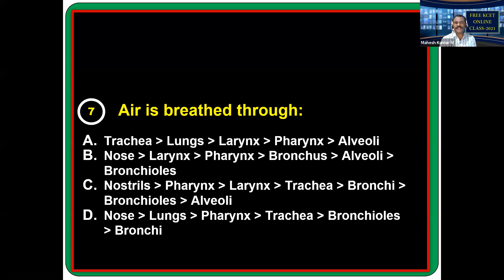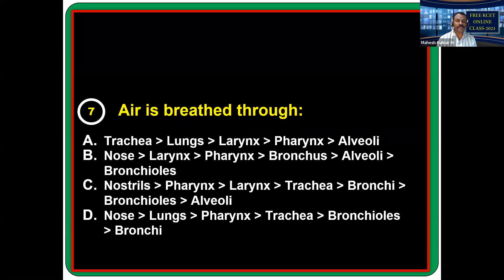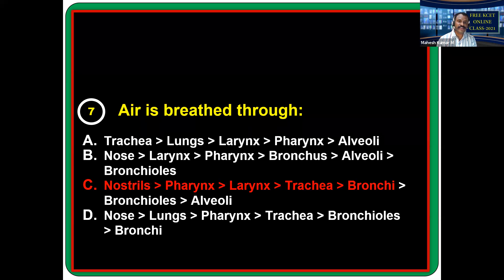Air is breathed through the respiratory system, which is a group of respiratory organs arranged sequentially. The respiratory system starts with the nose and nostrils, then pharynx, larynx, trachea, bronchi — primary, secondary, tertiary — alveolar ducts, alveolar sacs, and alveoli. The answer follows this pathway: nostrils, pharynx, and so on.